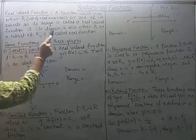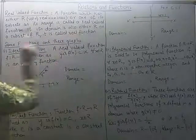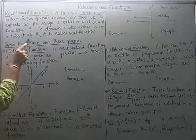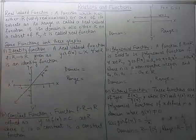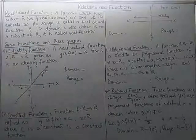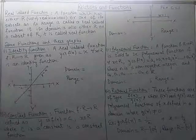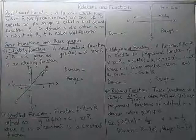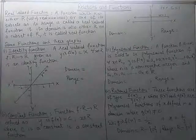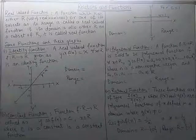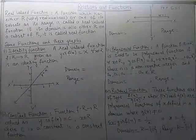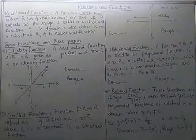Further, if its domain is also either R or a subset of R, it is called a real function. So if the function has both domain as well as its range as a set of real numbers or a subset of real numbers, then it will be a real function. You will find these kinds of functions as we proceed. Continuing with some of the functions and their graphs.